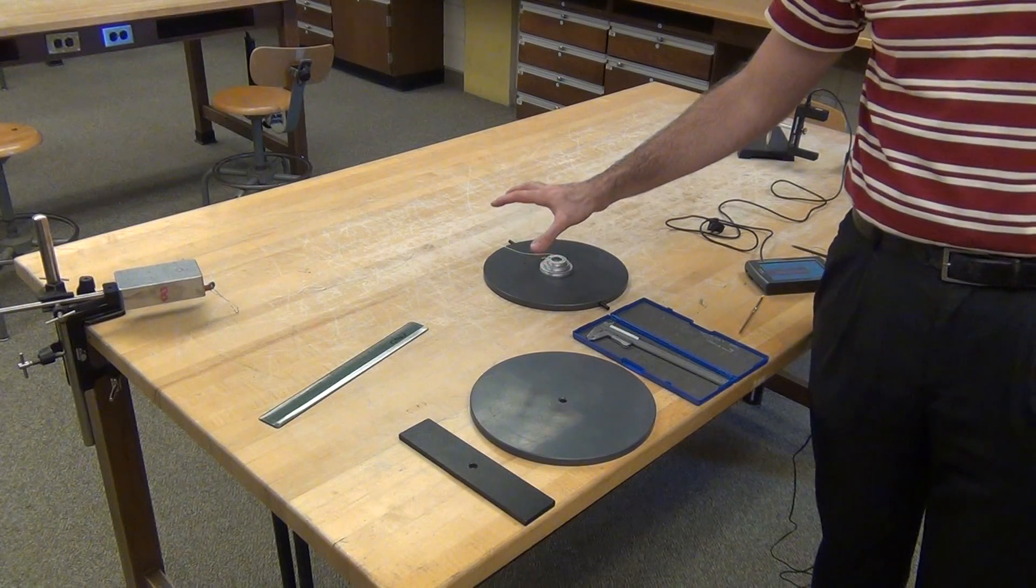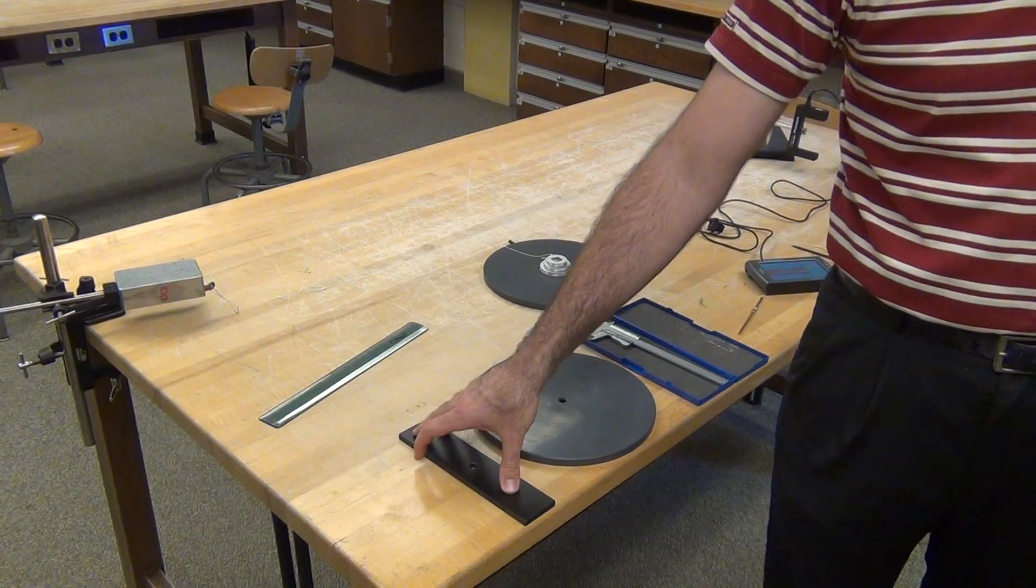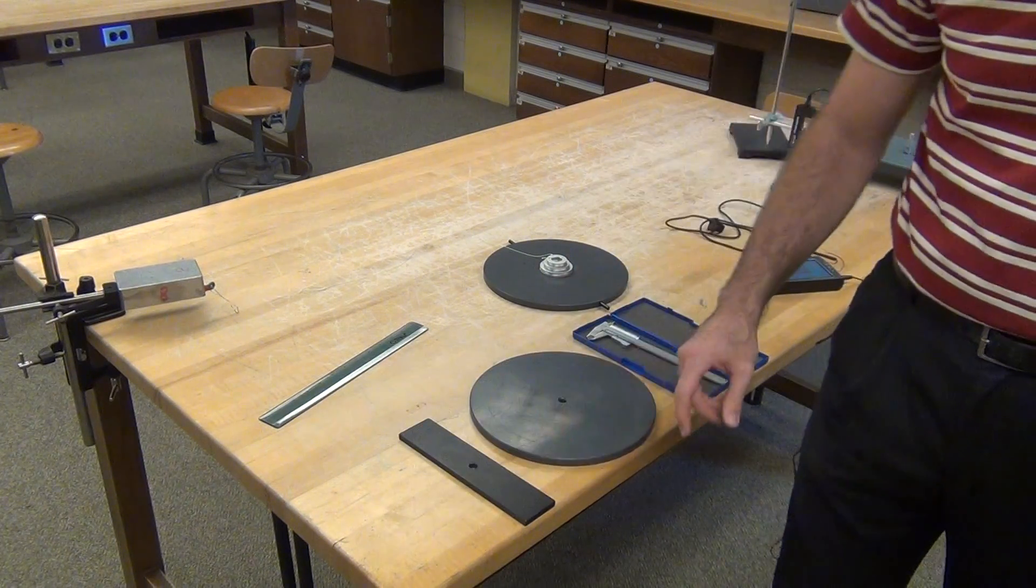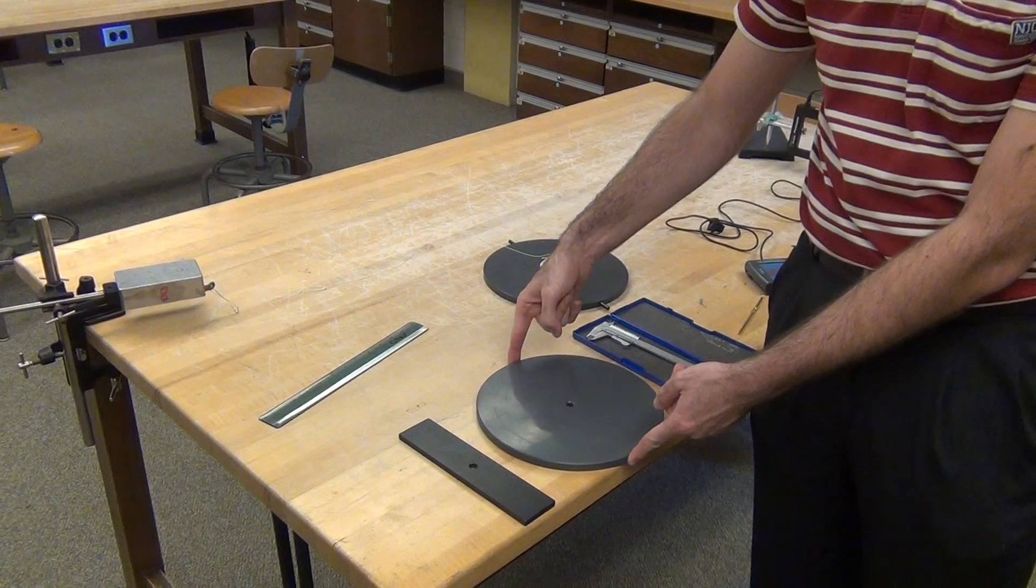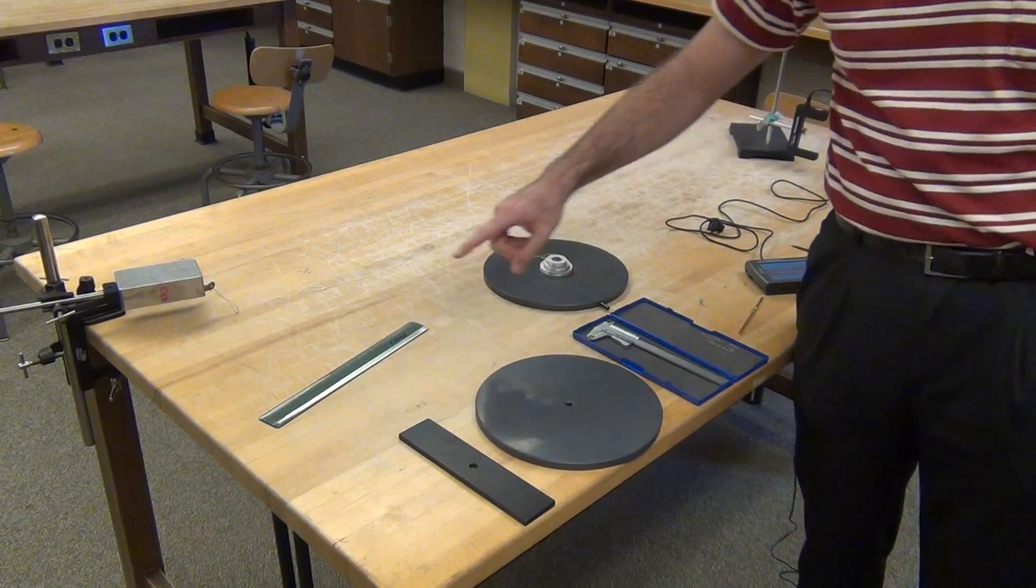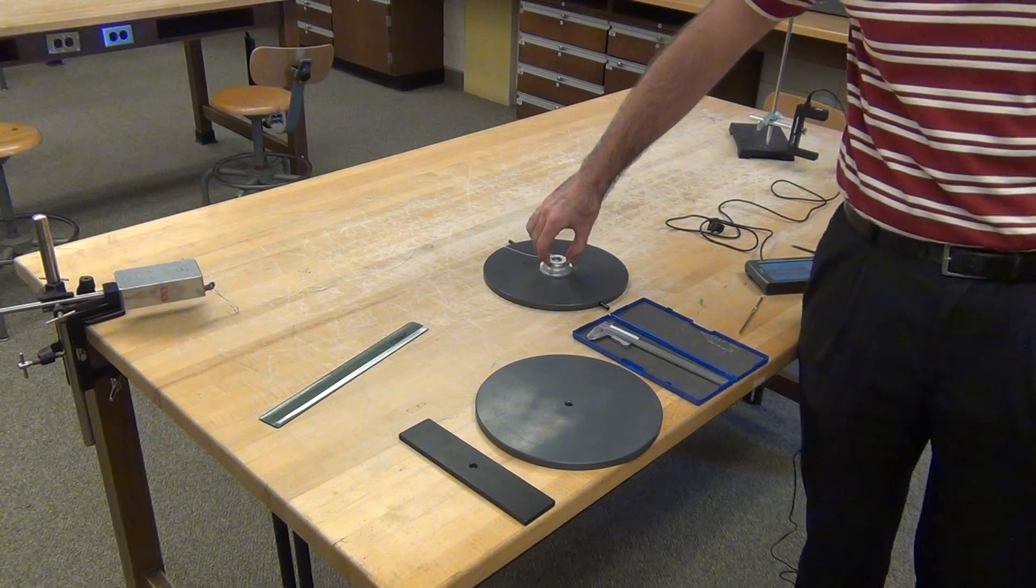We'll want the mass of our bare disk, the additional disk we'll add, and the bar we'll add. We'll also want the dimensions of these things that we're going to add. Because this is pulling, we need to know the moment arm that it pulls at.